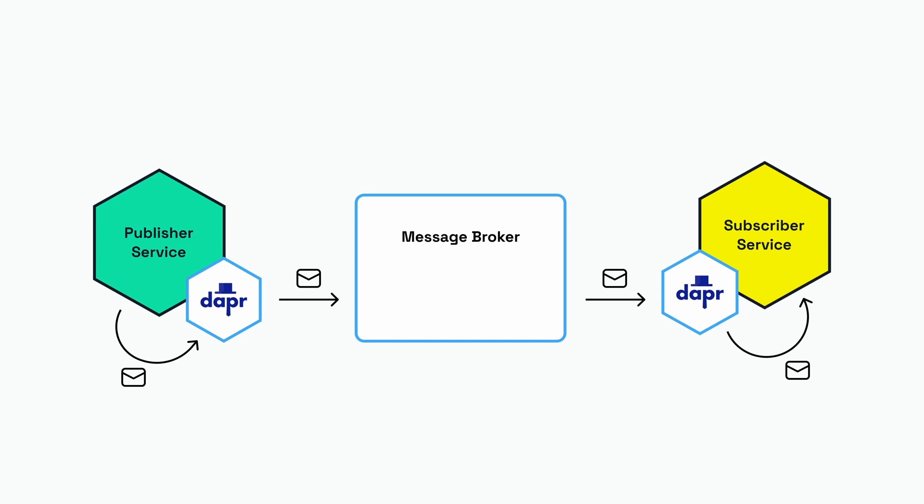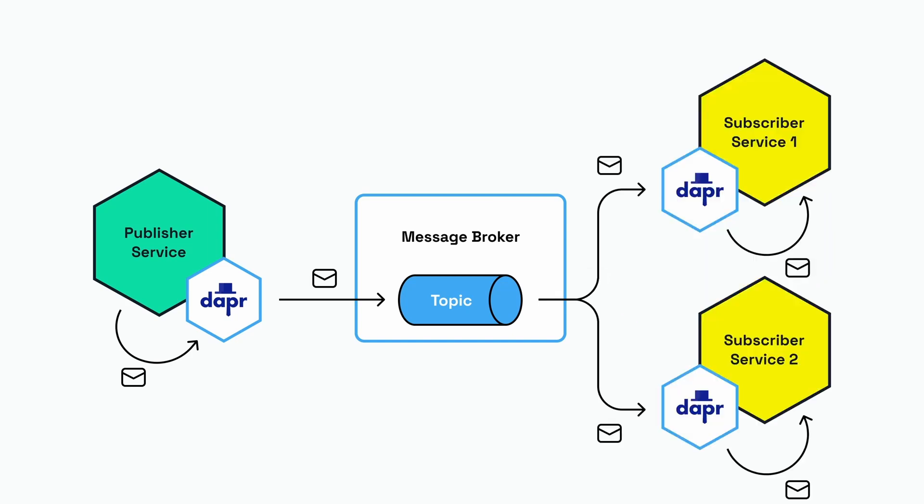To be more specific, we are actually sending a message to a specific topic in the message broker. The subscriber is subscribed to that topic. The nice thing about topics is that it allows multiple subscribers — it's quite normal to have a situation where the publisher service sends a message to a topic and there are multiple subscribers subscribed to that topic, all receiving the identical message.